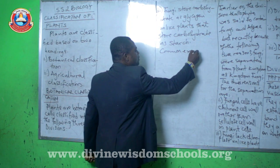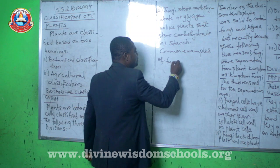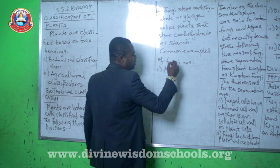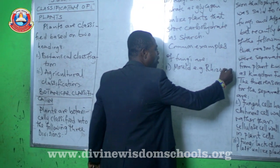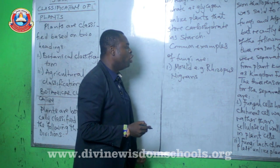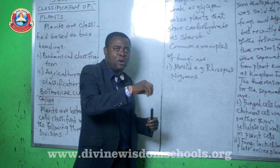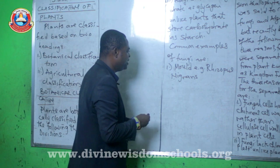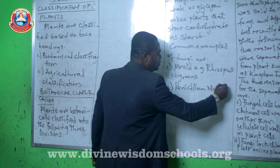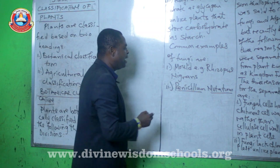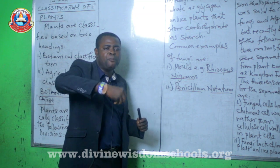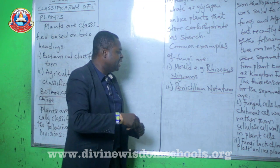Common examples of fungi: number one, we have the mold — for example, Rhizopus nigricans, which you can find on rotting bread. We call it bread mold. When bread is spoiled, those black particles on the body of the bread are mold — they are Rhizopus nigricans. Another one is Penicillium notatum. If you see the cob of maize, those pinkish particles you see when the cob is thrown away — that is Penicillium notatum.